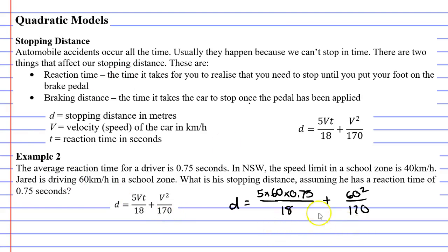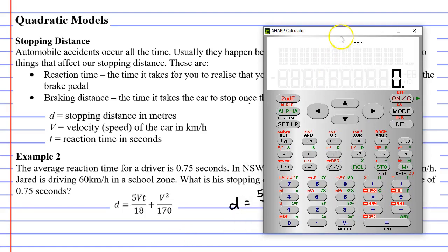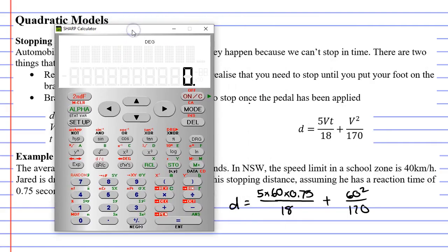So 170 there. We'll bring up our calculator. That's all we need to do, is just substitute it in and calculate it. At the top of our fraction, we've got 5 times 60 times 0.75 at the top. I'm going to press equals so I can work out what the top should be. That should be 225.